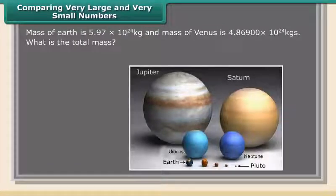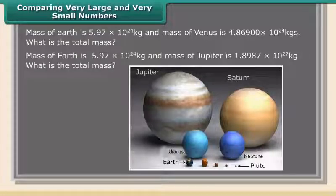Mass of Earth is 5.97 × 10²⁴ kg and mass of Venus is 4.869 × 10²⁶ kg. What is the total mass? Mass of Earth is 5.97 × 10²⁴ kg and mass of Jupiter is 1.8987 × 10²⁷ kg. What is the total mass?